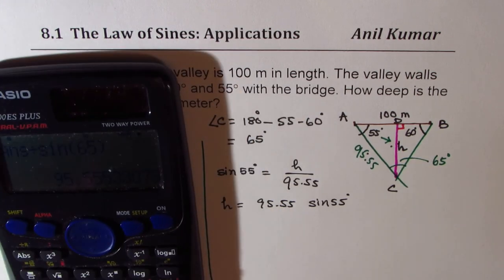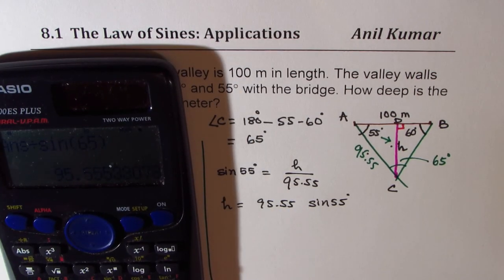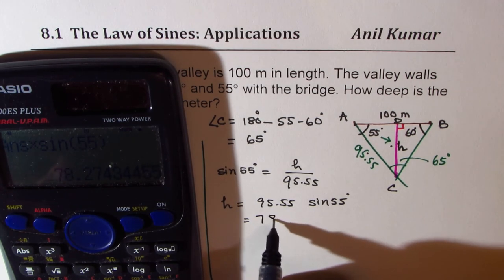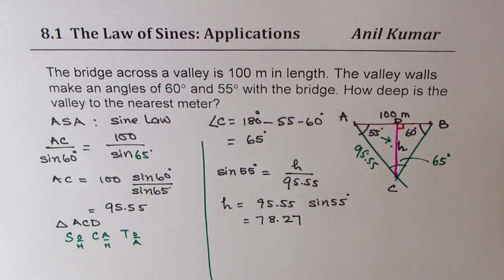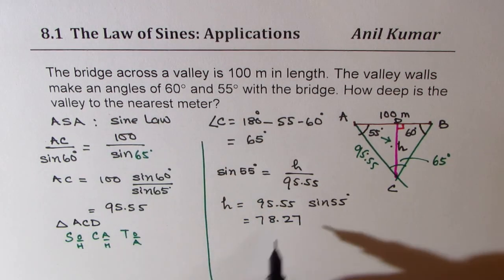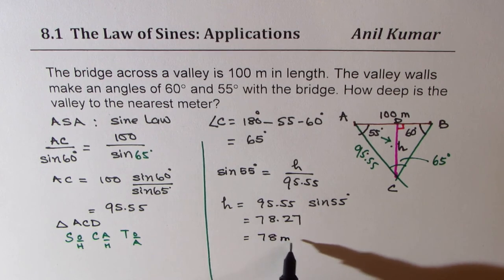We already have 95.55 in our calculator. We'll multiply this by sine of 55. That gives us 78.27. We have to round it to nearest meter. So it equals 78 meters.